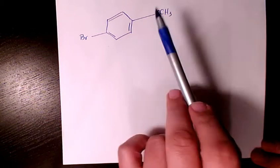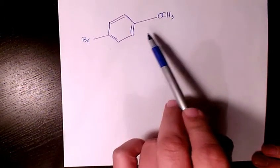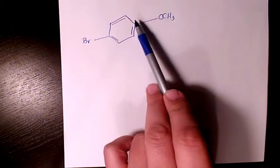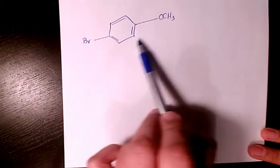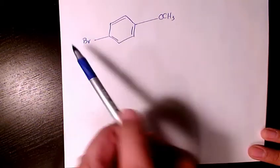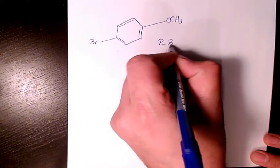As you see here we have oxygen here and we have a benzene phenyl group. So we have para, that's going to be para bromo.